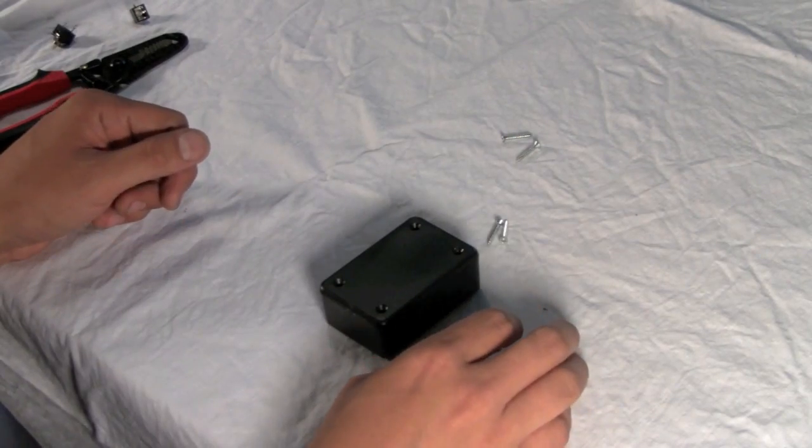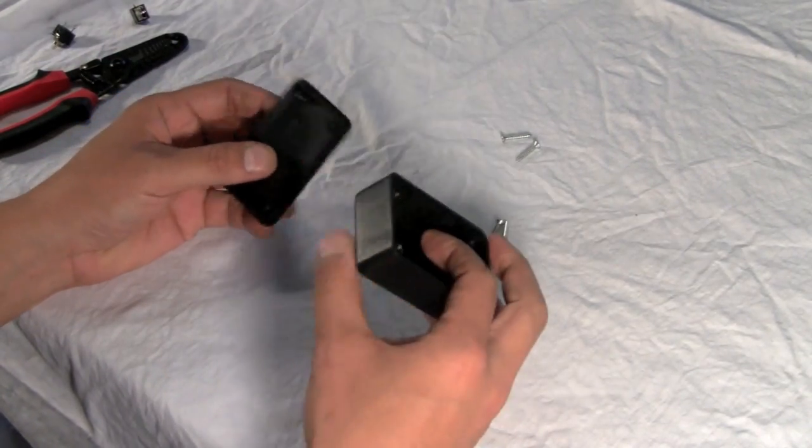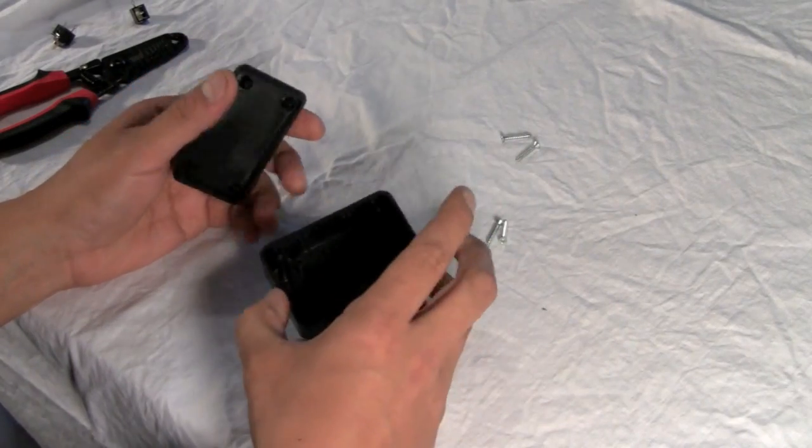So anyway, enough of me blabbing away, let's get to constructing the box. I hope you enjoy it. Alright so here we are, here's the project box. The first thing we're going to want to do is make the four holes that are going to go in here.